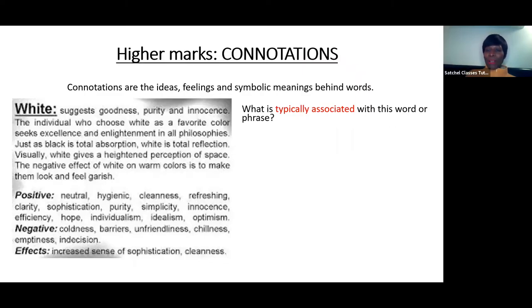For the higher marks, as well as talking about the words, you need to talk about the connotations. What are connotations? Connotations are the ideas, feelings, and symbolic meanings behind words. You need to think about what is typically associated with words. We have here an example of white. Typically, it's associated with goodness, purity, enlightenment, excellence. Also, what is the definition? White means something that's neutral and clean. But what does it make you imagine? We imagine cleanliness, something refreshing, some hope, individualism.